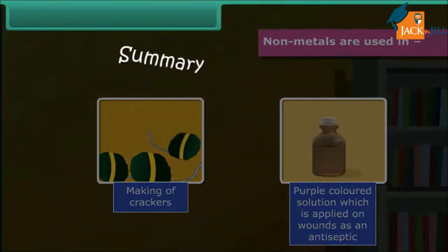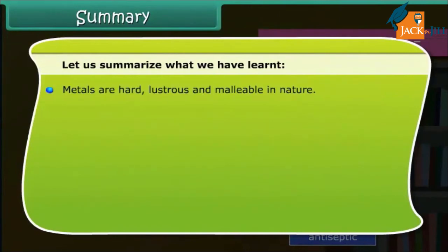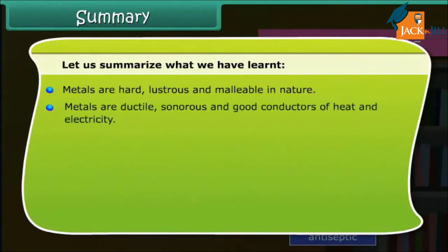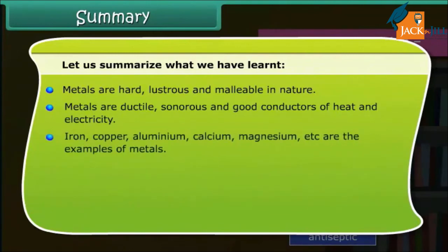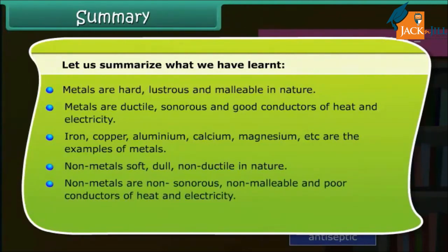Let us summarize what we have learned. Metals are hard, lustrous, and malleable in nature. Metals are ductile, sonorous, and good conductors of heat and electricity. Iron, copper, aluminium, calcium, magnesium etc. are examples of metals. Non-metals are soft, dull, and non-ductile in nature. Non-metals are non-sonorous, non-malleable, and poor conductors of heat and electricity.